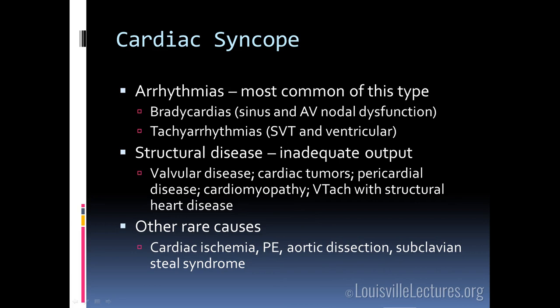One thing to consider when talking about syncope is the age of your patient. Neurocardiogenic syncope is the most common type across all age groups, but goes from about 95% in the under-40 crowd, gradually decreasing in prevalence, to only about 50% of syncope cases in those over 40. During that period of increasing age, orthostatic hypotension goes up significantly, as do arrhythmias, and then structural cardiac disease. All have a much more important role in the etiology of syncope in patients over 60.